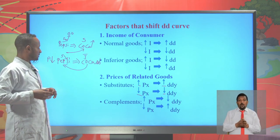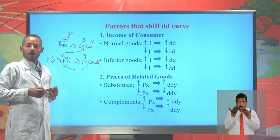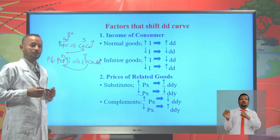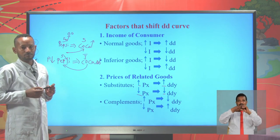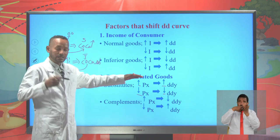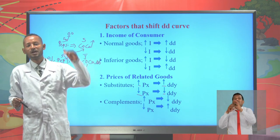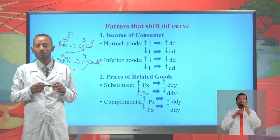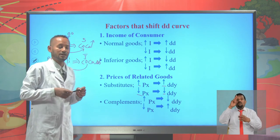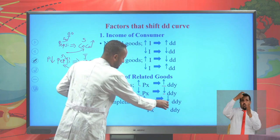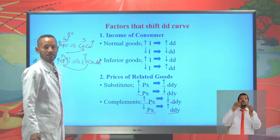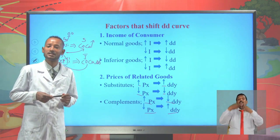In contrast, complements are goods that are used together — for example, automobile and petroleum. Two goods are complements if a rise in the price of one declines the demand for the other. If two goods are complements, the price of one and the demand for the other are inversely related: a rise in price of X always declines demand for Y, and a fall in price of X always increases demand for Y.